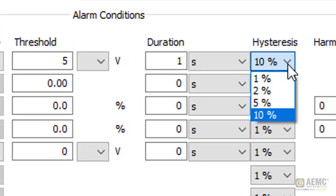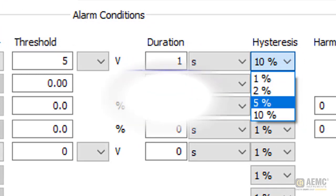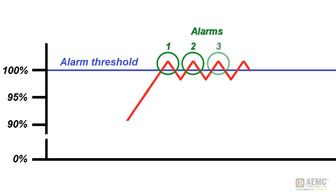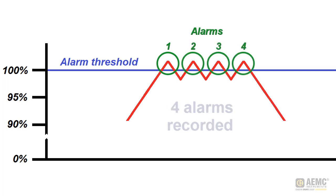To understand how this works, consider an alarm with no hysteresis. The instant the trigger threshold is exceeded, the alarm activates and deactivates the instant the measurement falls below the threshold. In this situation, multiple alarms may be recorded if the measurement is very close to the threshold. Each time the measurement fluctuates slightly above and below the trigger, a separate alarm is reported. This can result in multiple alarms being detected for what is in reality a single spike event.